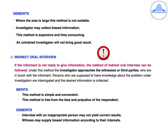In indirect oral interview, if the informant is not ready to give information, the investigator approaches witnesses or third parties who are in touch with the informant. Persons who are supposed to have knowledge about the problem are interrogated and the desired information is collected. Merits: this method is simple, convenient, and free from the bias and prejudice of the respondent. Demerits: interview with an inappropriate person may not yield correct results, and witnesses may supply biased information according to their own interests.